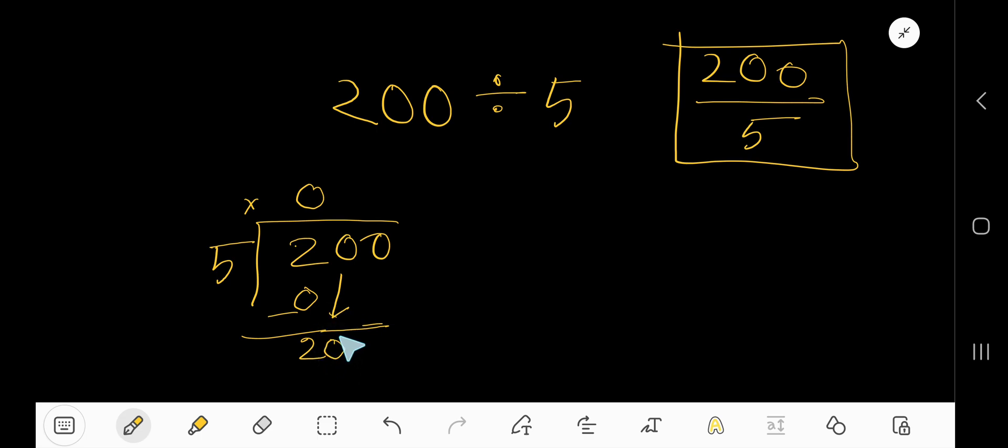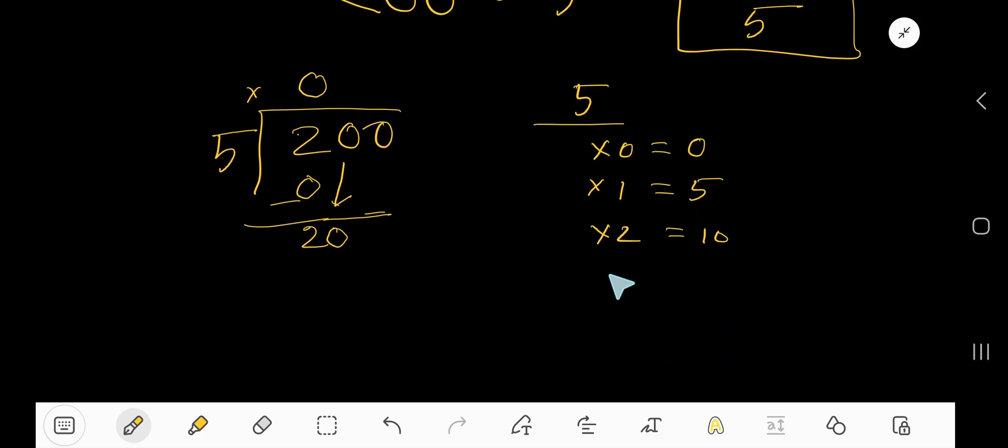We need the multiplication table of 5. 5×0=0, 5×1=5, 5×2=10, 5×3=15, 5×4=20.